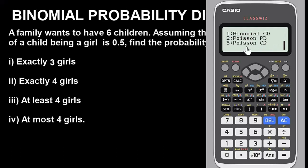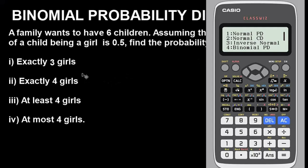Binomial CD is for solving problems involving 'at least' and 'at most', whereas Binomial PD is for solving problems that don't involve 'at least' or 'at most' — like parts (i) and (ii) of this question: exactly three girls and exactly four girls. Having understood that, let's solve parts (i) and (ii). Press 4 to select Binomial PD.